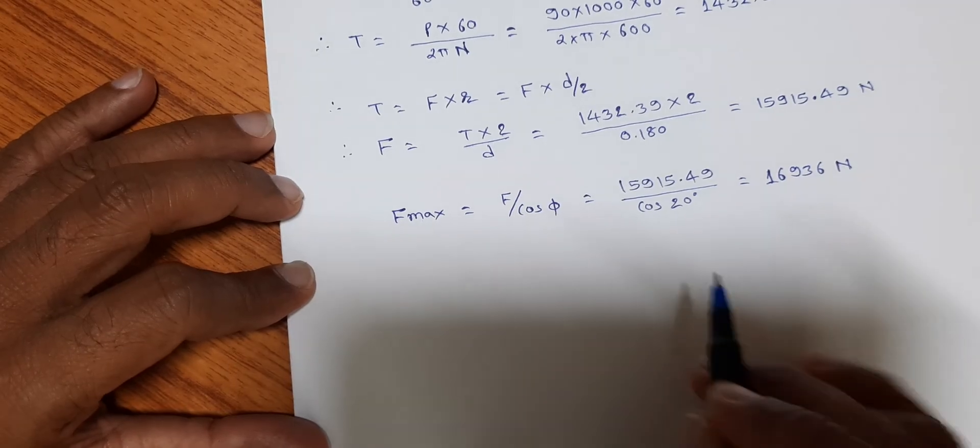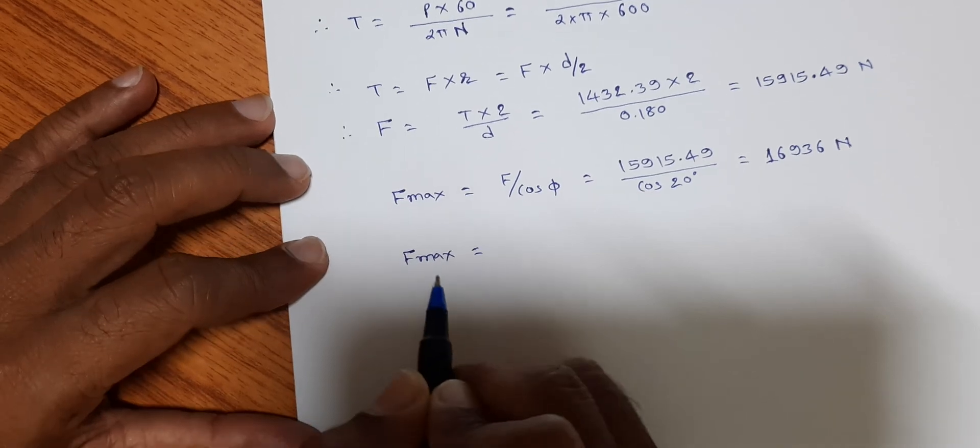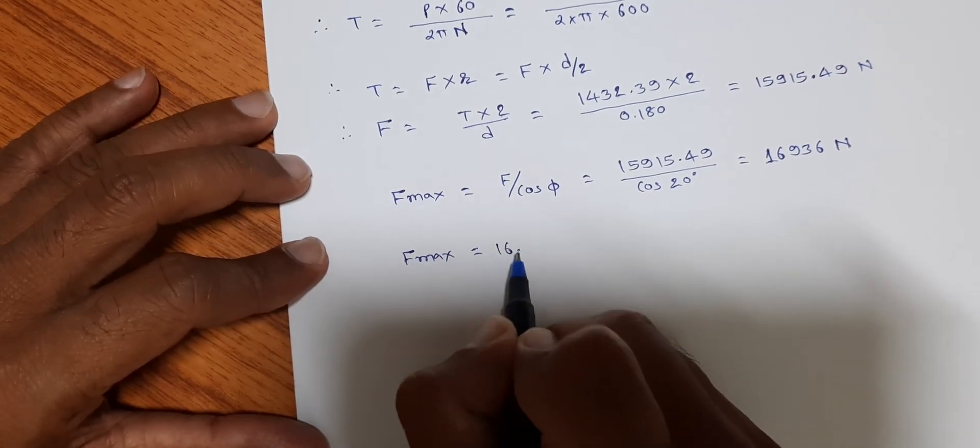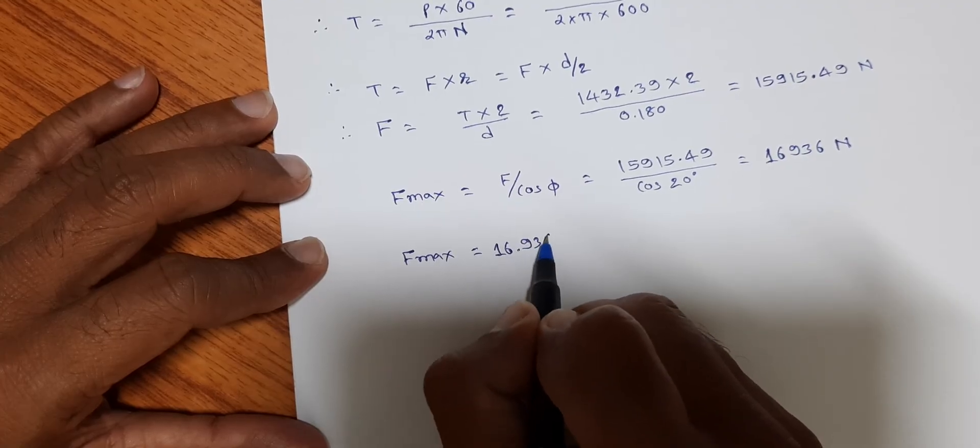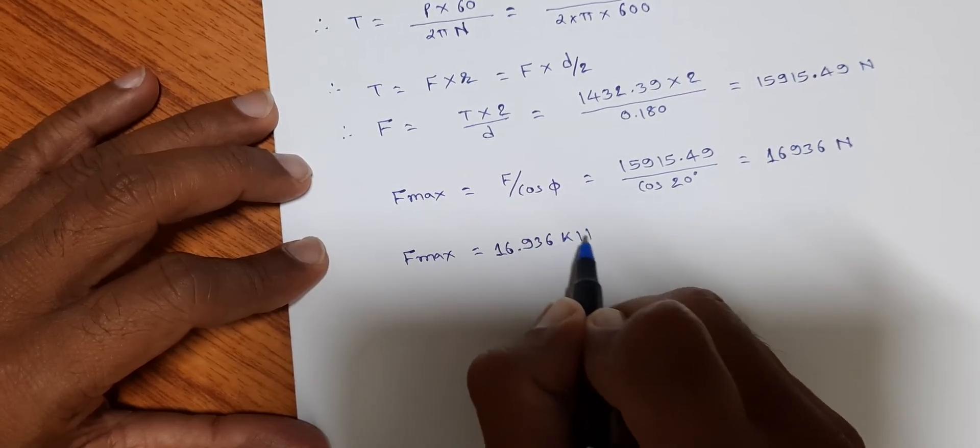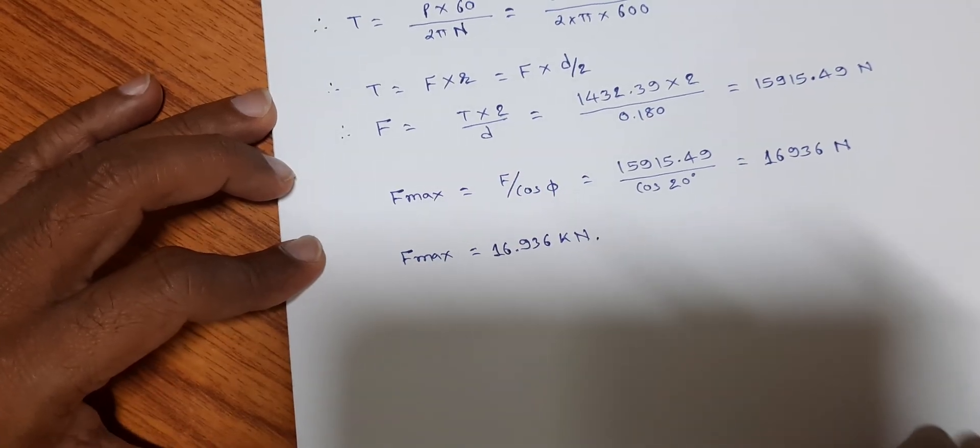So writing in terms of kilonewtons, F_max will be equal to 16.936 kilonewtons.